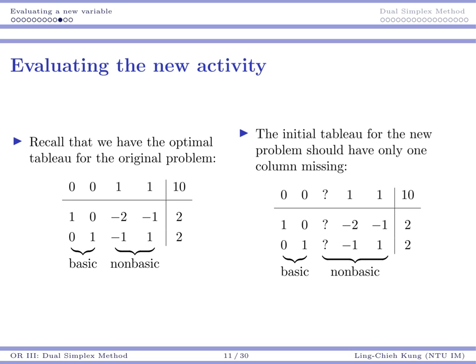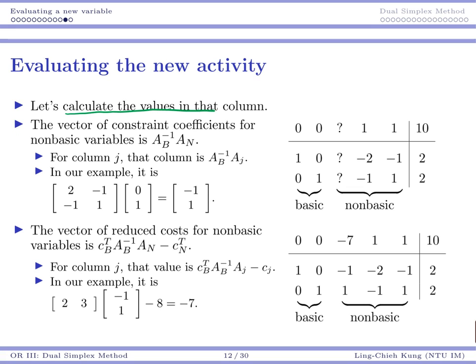So because Tableau is an easier representation or easier visualization, let's use Tableau to go through the process. Initially, we have this. This is our optimal Tableau. So you can see the identity matrix here. So now we want to ask what's going to happen if we have the new column. So the new column is here in the optimal Tableau. We don't know what are the values, but we are able to calculate them.